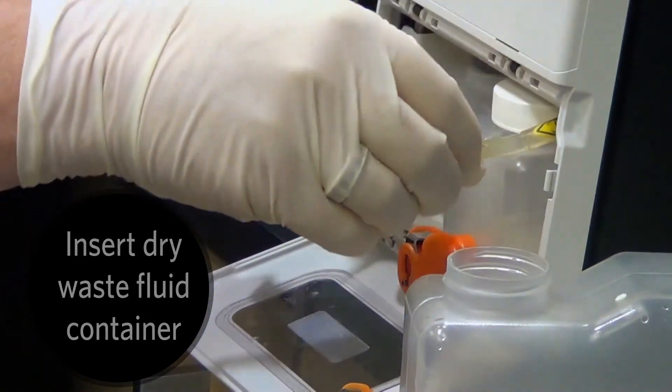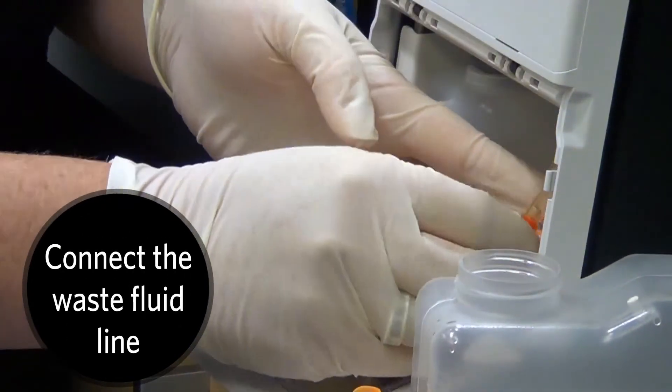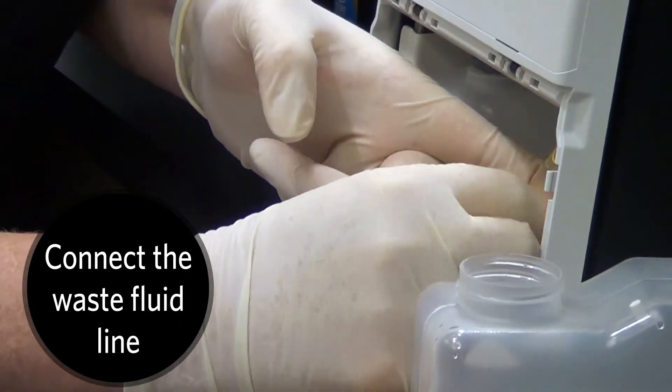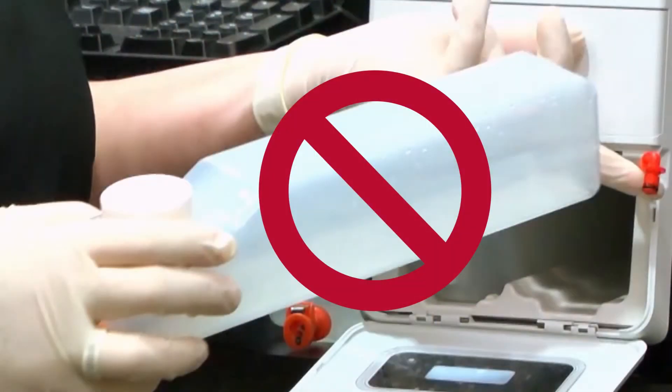Insert a dry waste fluid container into the fluid compartment and connect the orange waste fluid line. Note, make sure the replacement waste fluid container is completely dry with no condensation. Otherwise, the empty container will continue to trigger a waste bottle full message.